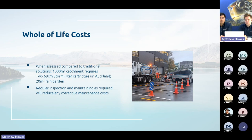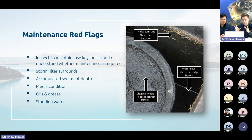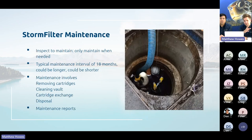Regular inspection and maintenance is important — the key point is that you don't maintain regularly, you inspect regularly and then maintain when needed. We look at the surrounds of the Storm Filter for good access, accumulated sediment depth, the condition of the media (which is why it's important that the hood is easy to lift), any oils and grease, and standing water. If any of those reach a certain level, that triggers a maintenance. You only maintain once inspection has verified you need it.